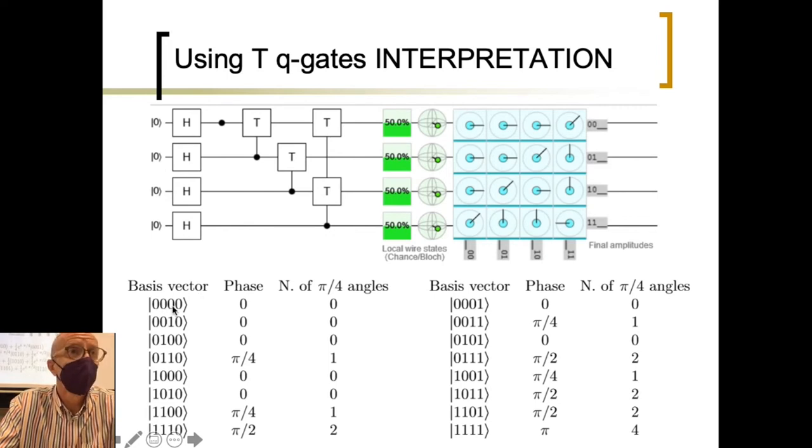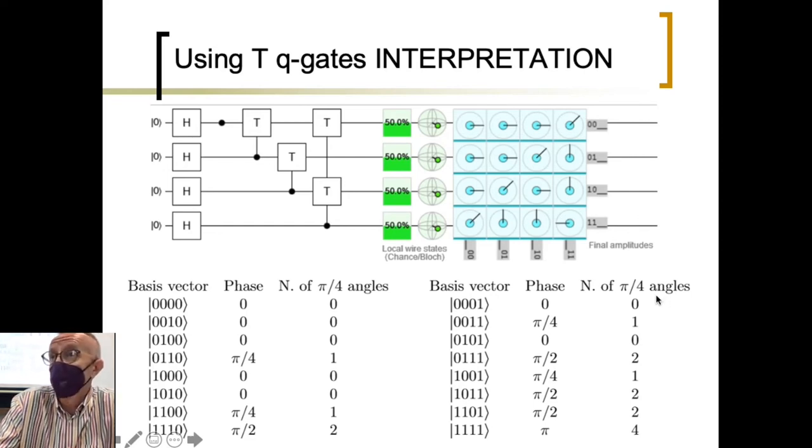So now this is the total information that this circuit is providing us with. So zero, zero, zero, zero is encoded over here, and the phase is zero. So the number of pi over four angles that has been moved is, of course, zero. And this is one, one, two, and so on. And each of these pi over four angles represents the number of edges in the correspondence of graph. That's clear.